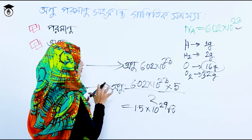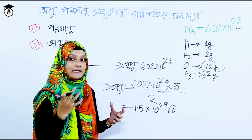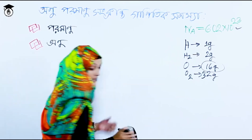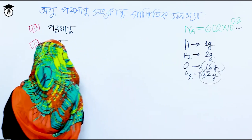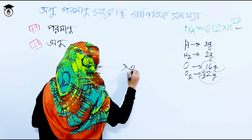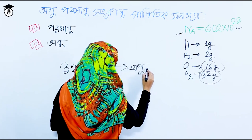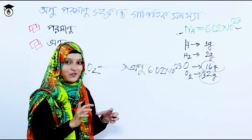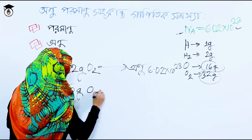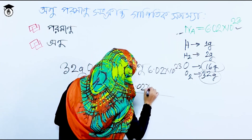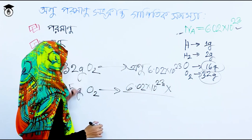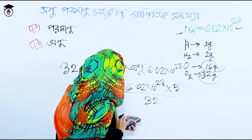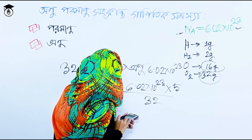Now for oxygen: 32 grams of O₂ contains 6.02 into 10 to the power of 23 molecules. So 5 grams of oxygen contains 6.02 into 10 to the power of 23, multiplied by 5, divided by 32 molecules.